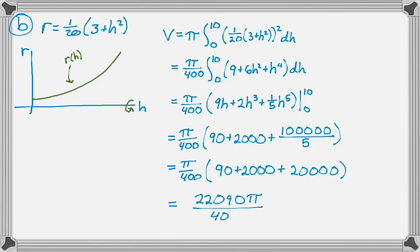So 90 plus 2000 plus 20,000. And I'm just going to keep going. I mean, I actually could have stopped. As soon as I just had all numbers, I could have stopped and said it was in inches cubed. But I'm pretty sure most people would keep going on this. So 2209 pi over 40, and then that's going to be in inches cubed.